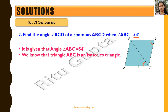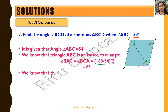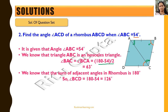Since triangle ABC is isosceles, angles BAC and BCA are equal, and each is given by (180 - 54) / 2 = 63 degrees. We also know that the sum of adjacent angles in a rhombus is 180 degrees, so angle BCD = 180 - 54 = 126 degrees. Therefore, angle ACD = angle BCD - angle BCA = 126 - 63 = 63 degrees.